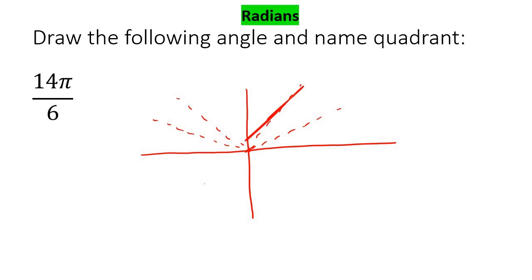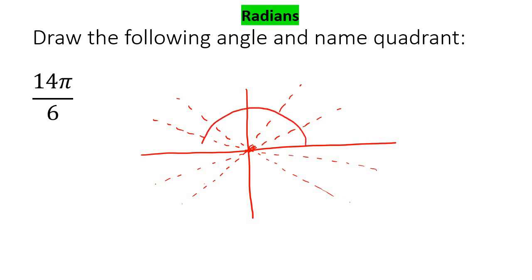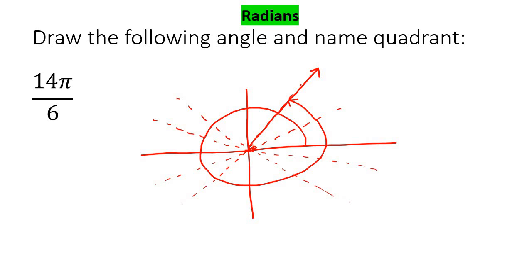I'm just extending the lines. We're going to do 14 of those — that's a lot. So if you go one, two, three, four, five, six, seven, eight, nine, ten, eleven, twelve, thirteen, fourteen. We can then draw the line going up, and so that is where that angle would be. Later on when we look at reference angles, it would be that part there, but that's how we draw that one.